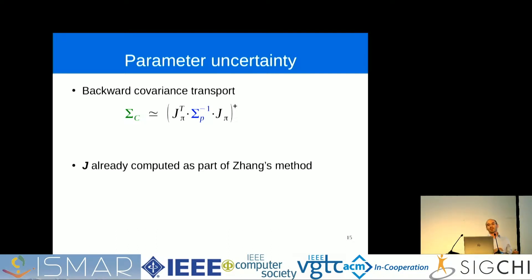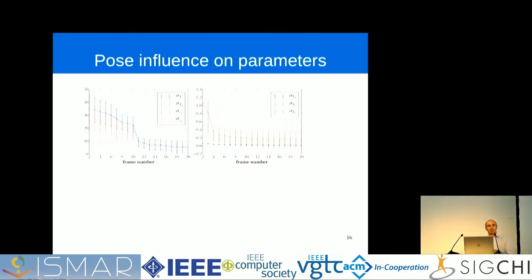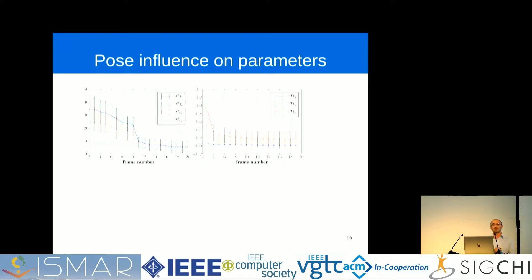Now that we have a sense of parameter uncertainty, let's look at an experiment. This may be the most important slide of my talk. On the left, we see the uncertainties for the pinhole parameters like principal point and focal length; on the right, the uncertainties for the radial distortion coefficients. This is measured after calibration, after adding each new frame — 20 frames in total. This is a synthetic image, so it is reproducible. For capturing these images, we performed a specific motion.